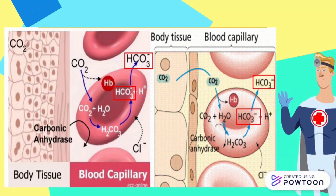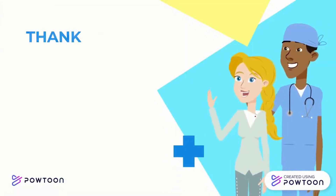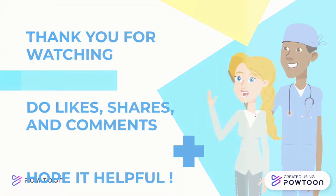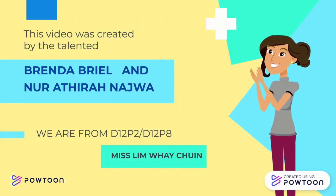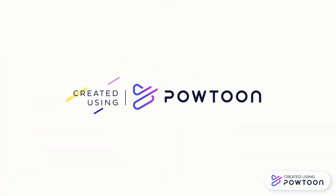While in alveoli, HCO₃⁻ diffuses into the erythrocyte. The hydrogen ion from HHb combines with HCO₃⁻ to form carbonic acid, H₂CO₃. The carbonic anhydrase reaction proceeds in reverse direction, converting carbonic acid into H₂O and CO₂. CO₂ then diffuses out of the erythrocyte and moves into the alveolus space.